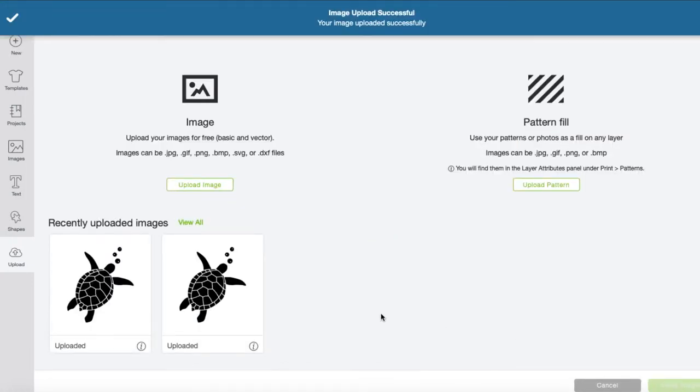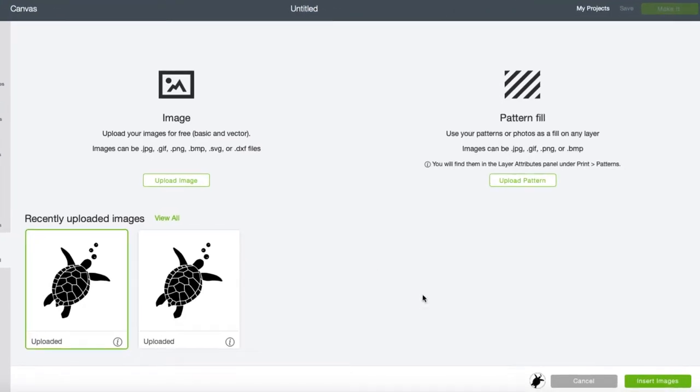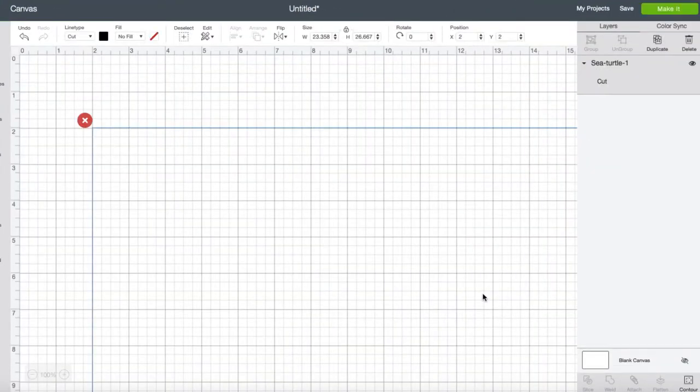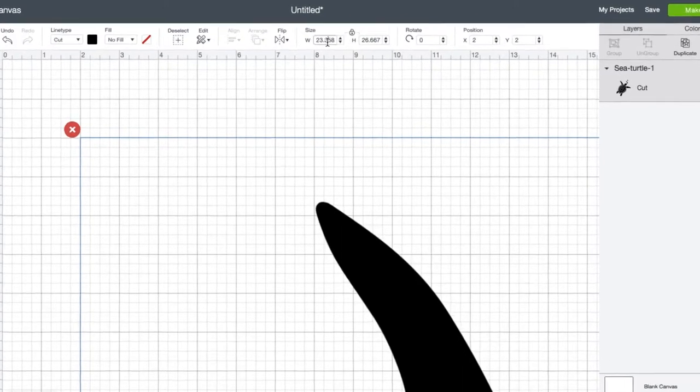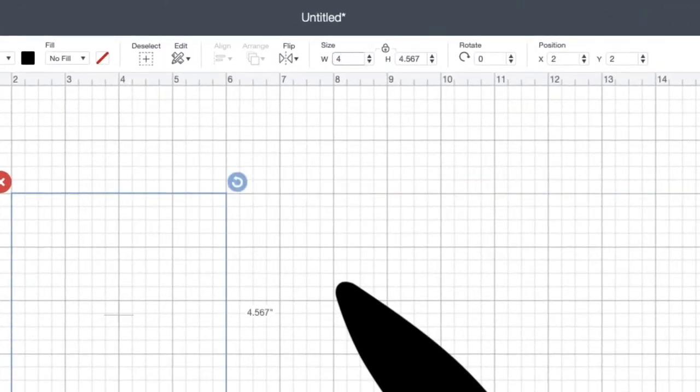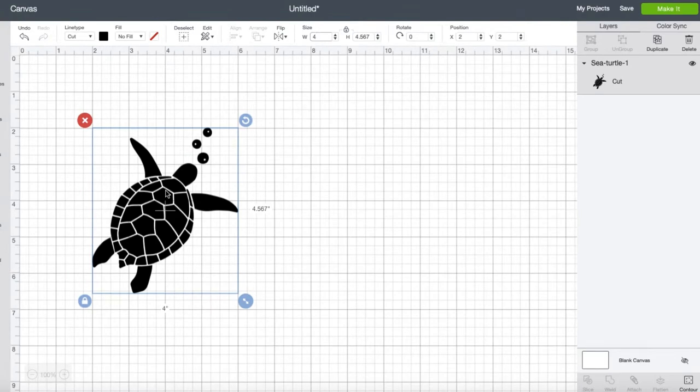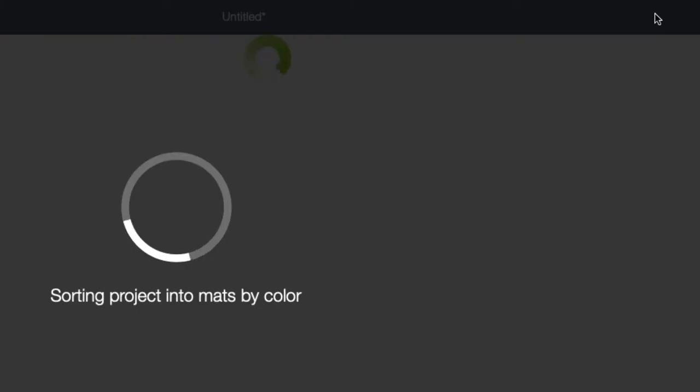We're going to look at our recent and select the image that we just uploaded, and then insert it into our project. Alright, once our file is in I'm actually going to resize this one to 4 inches at the top, and it looks good so we're going to click the make it button.